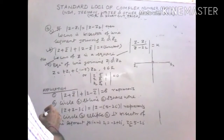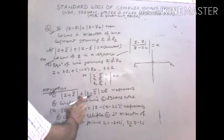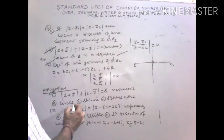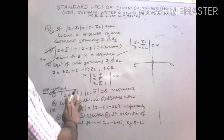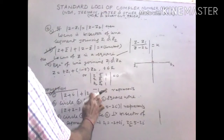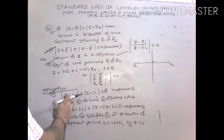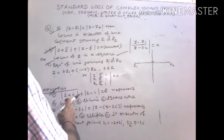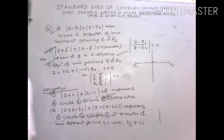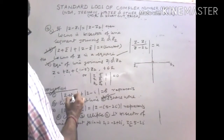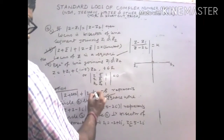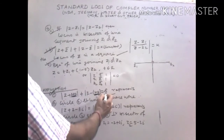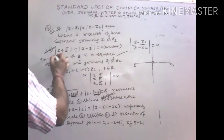Application, problem number 1: |Z + Z̄| · |Z - Z̄| = 8. This matches the case for a square, so it represents a square. For example, if Z = 2 + 3i and its conjugate Z = 2 - 3i, then |Z + Z̄| · |Z - Z̄| = K represents a square. Recall this result.